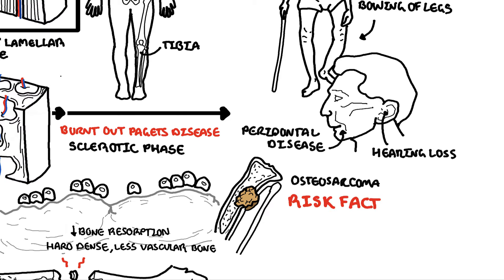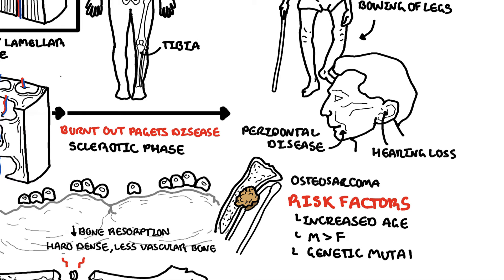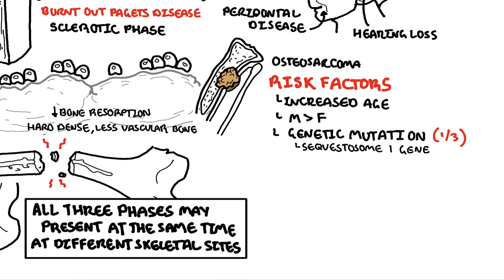Risk factors for developing Paget's disease include increasing age and it is slightly more dominant in males. One third of cases have a genetic component, with an autosomal dominant pattern of inheritance. The gene most commonly affected is the sequestrosome 1 gene. Classical environmental factors associated with Paget's disease include paramyxovirus and having a rural lifestyle.